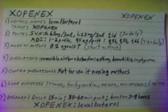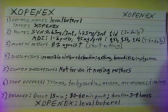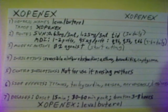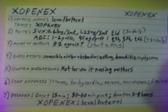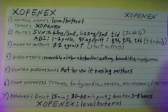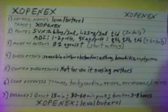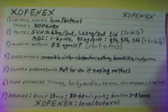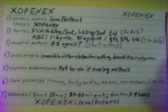The MDI can be given Q4H, Q5H, or Q6H — every 4, 5, or 6 hours. The mode of action of Xopenex is a B2 agonist, which causes dilation of smooth breathing muscle.